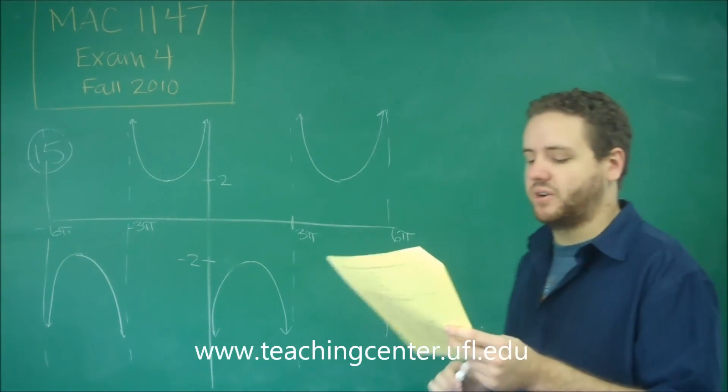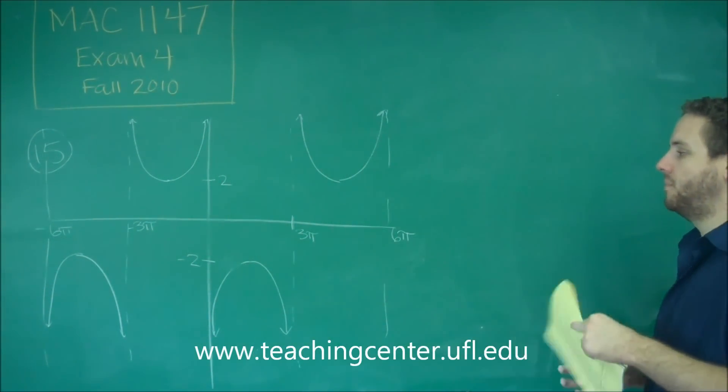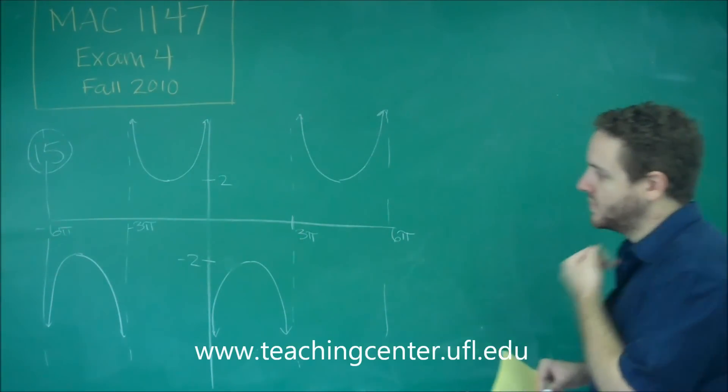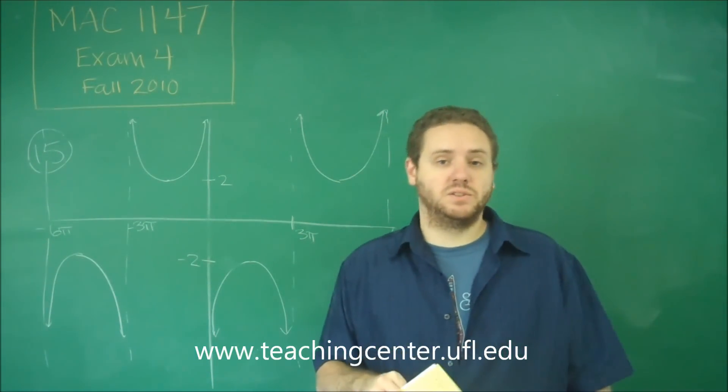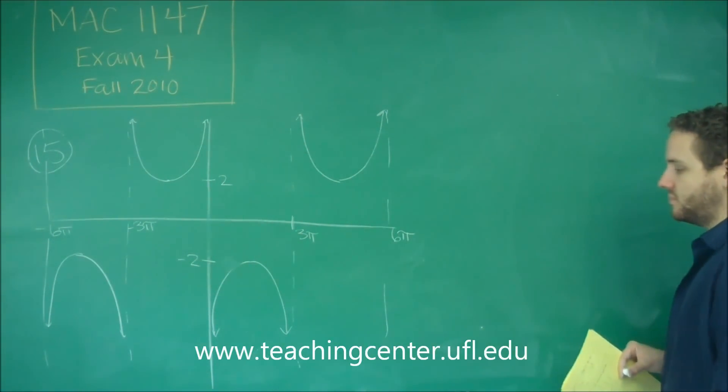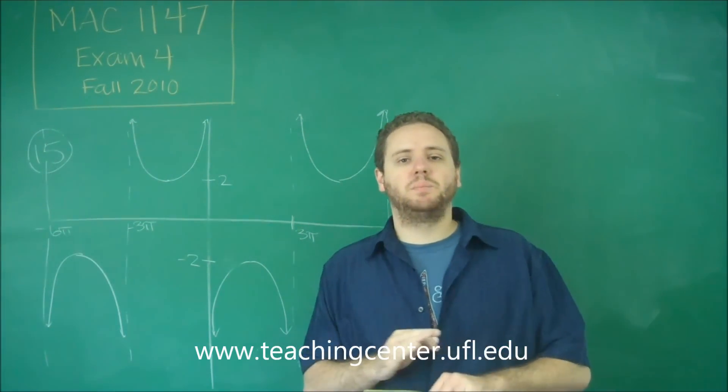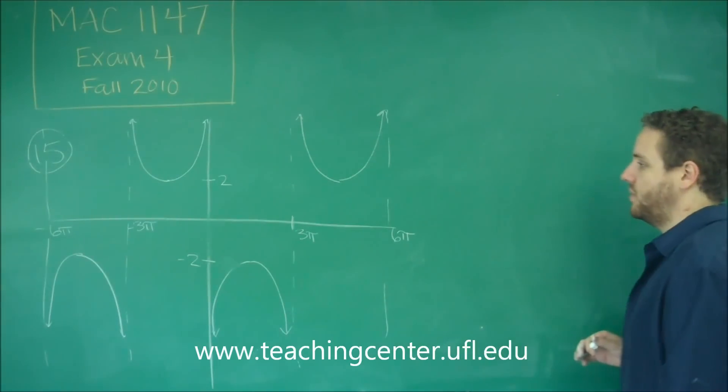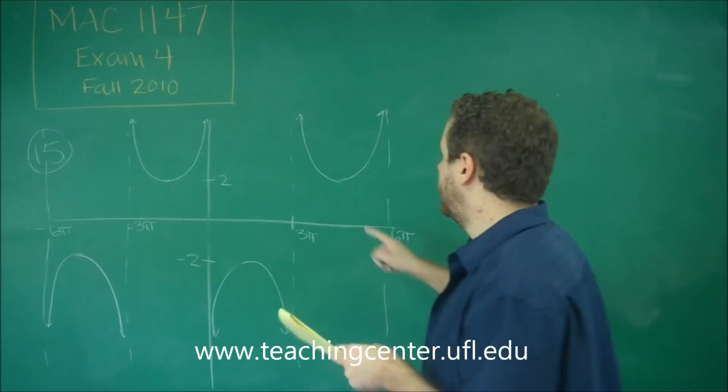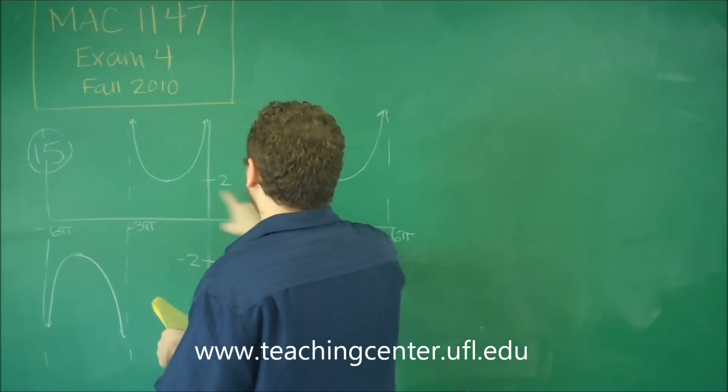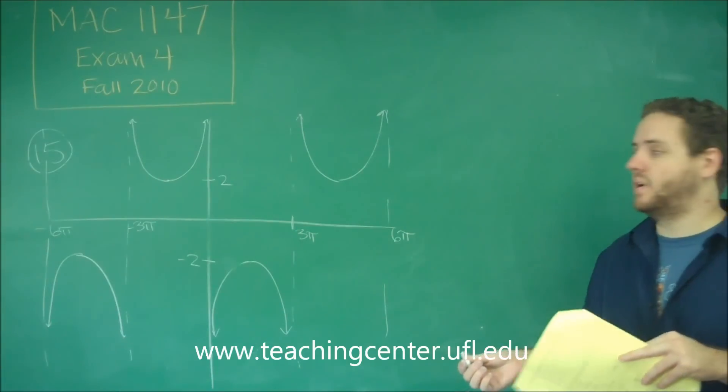And we want to find which of these functions matches this. So there's a couple things you should think about here before you really start getting to the functions. This is either a secant or cosecant. And it could be either, depending on how it's shifted or reflected or anything like that. Well, if you look at all your answer choices, none of these are reflected. So we're dealing purely with shifts here. So no reflections whatsoever. There has to be a 2 in front of it, because the y's are all multiplied by 2, because 2 and negative 2 are our starting points. Well, that's every one of these, so that doesn't help us. But that's something you should recognize.